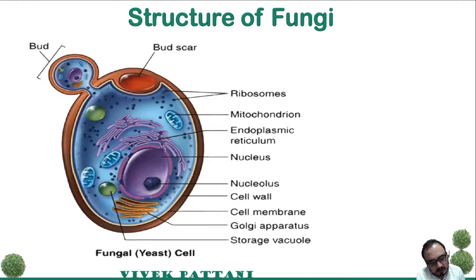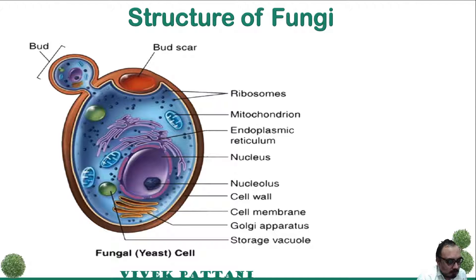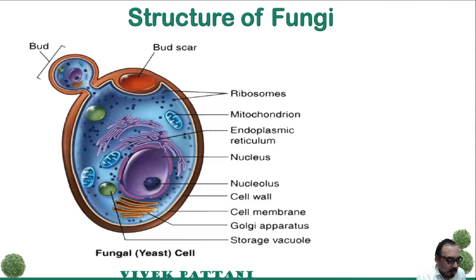The body, or vegetative structure, of the fungus is called the thallus. It has varying complexity and size, ranging from single-celled microscopic yeast to multicellular molds and even puffballs or mushroom-like structures.